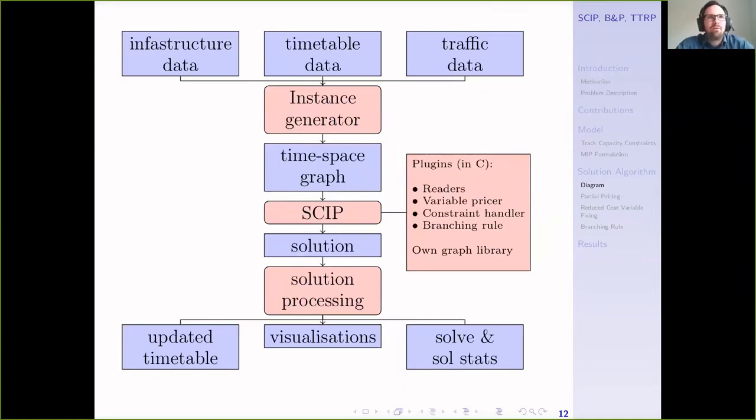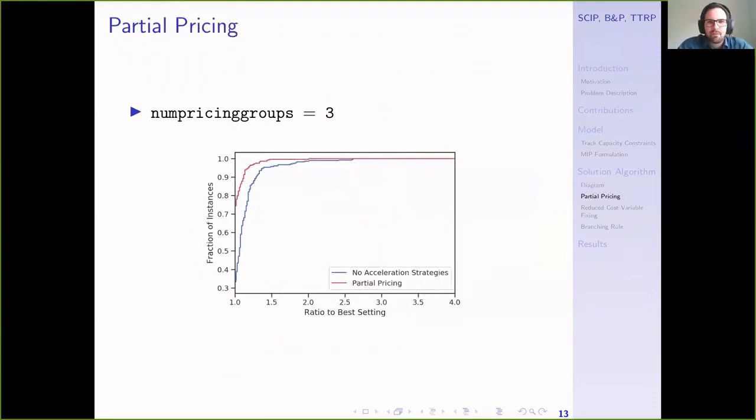We've extended it by using plugins written in C. I'll point out three highlights from our implementation. The first is a very popular technique called partial pricing. Rather than solving every sub-problem in every iteration of column generation, you simply solve some of the sub-problems. We have a parameter called num pricing groups. We found that three is a good value to pick. That means only a third of the sub-problems are solved in each iteration. The idea is it allows the dual values to converge more quickly relative to the effort you're putting into solving sub-problems. You can see from the performance profile there's been a modest improvement in solution times on very many instances.